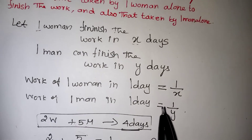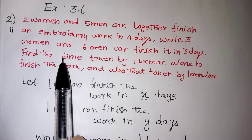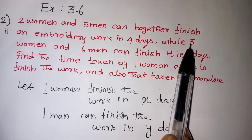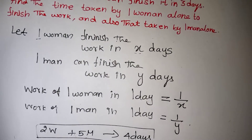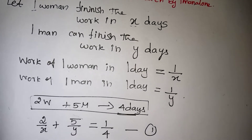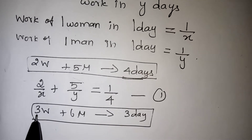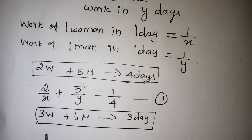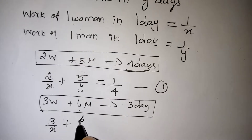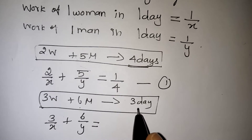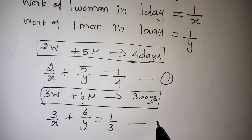For the second equation, while 3 women and 6 men can finish it in 3 days. For 3 women, 1 day work will be 3 by x. For 6 men, 1 day work will be 6 by y, which equals 1 by 3, since they take 3 days to complete the work. So this is our second equation.